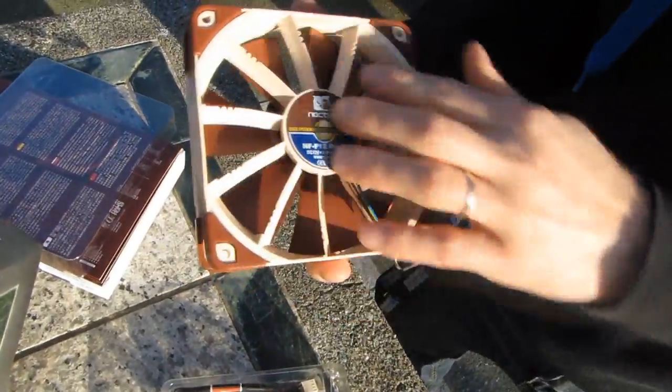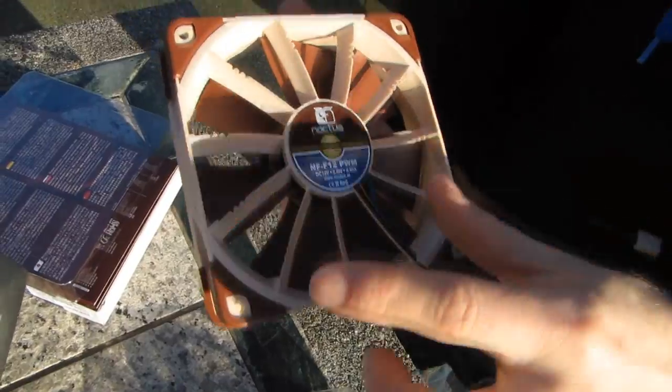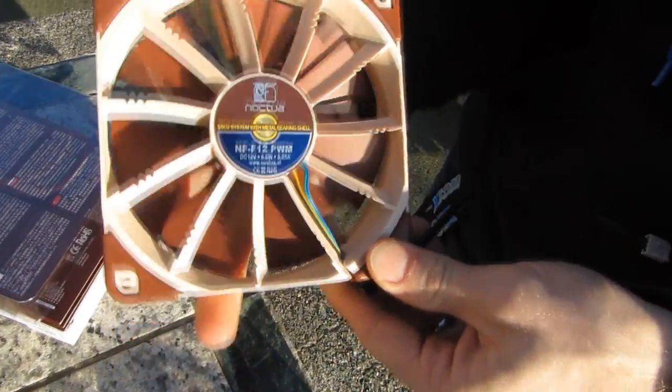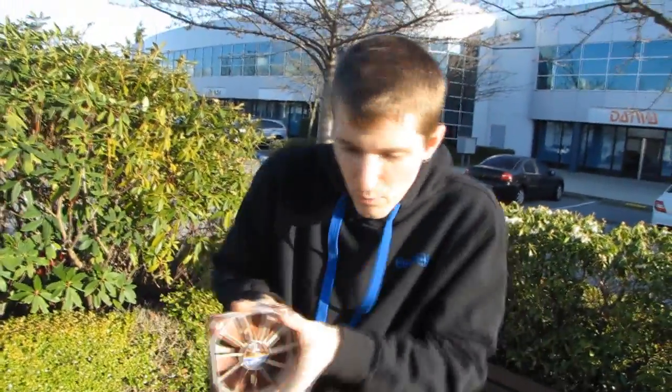This is how Noctua achieves the directed airflow. You can see the fan blades pass over like this, and what these are here for is to actually keep all of the air moving in one direction, in one tunnel away from the fan frame itself.